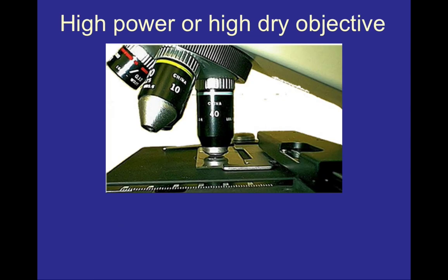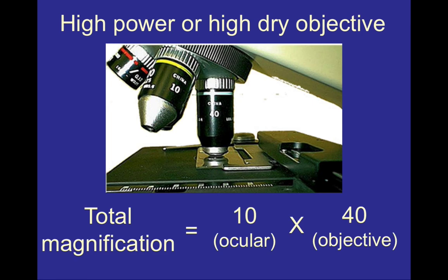Our final objective lens discussed in this class is the high power objective lens. The high power objective lens has the blue line and a magnification of 40 times. Using the same theory, we take 40 and multiply it by 10, giving us a total magnification of 400. You need to be able to calculate total magnification based on the ocular lens strength and the strength of the objective lens being used.